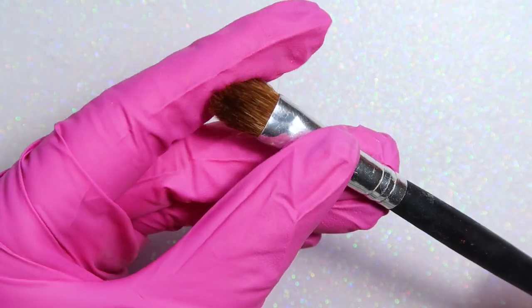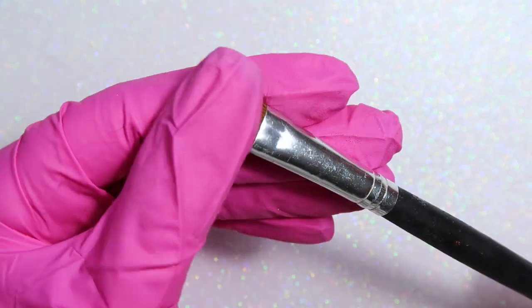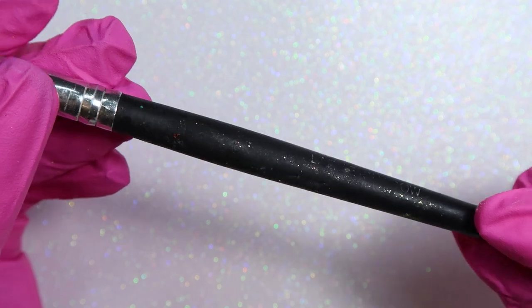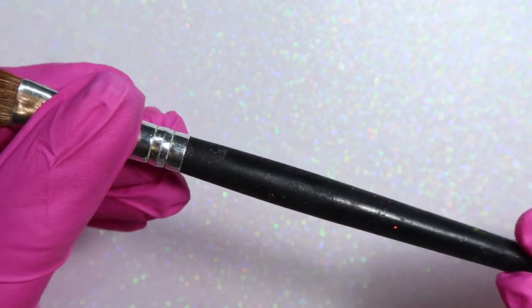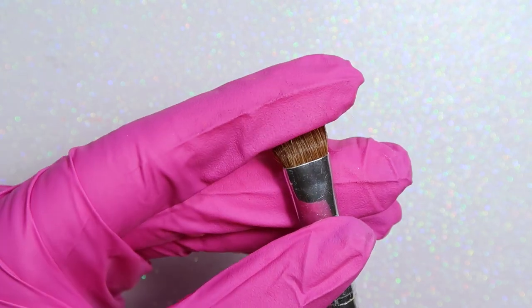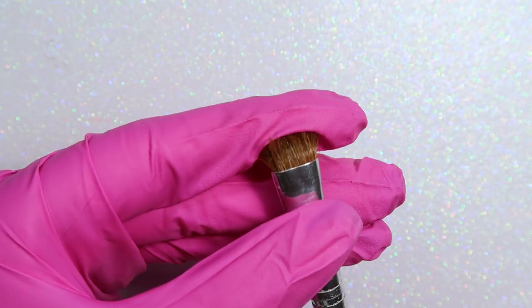So the brush I'm going to be using for this tutorial is a really old just fluffy eyeshadow brush, something cheap. I definitely don't recommend using anything expensive or super nice for using pigments because it's going to get full of pigments and different colors.